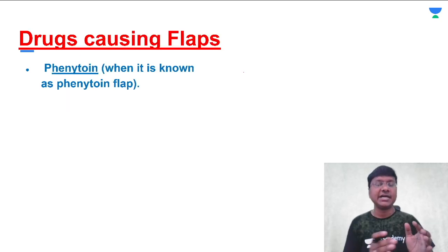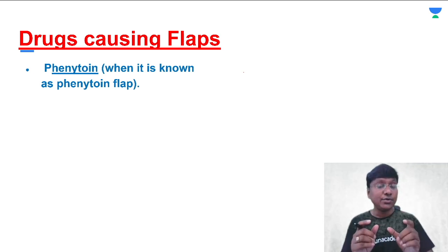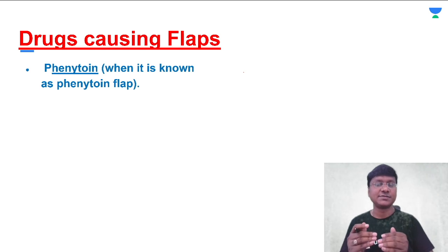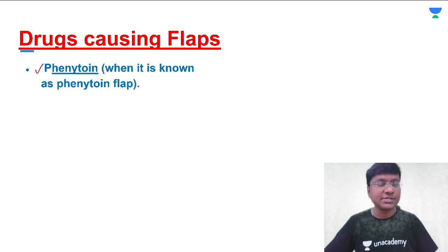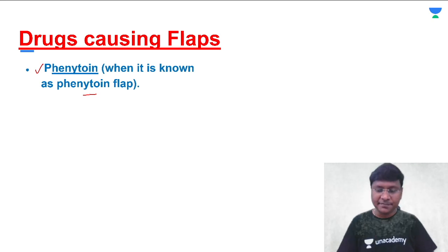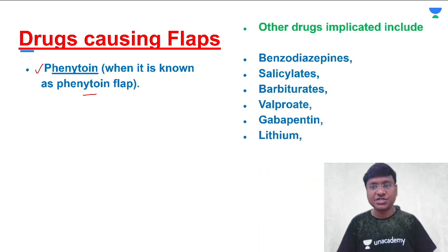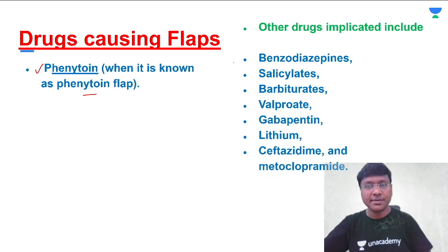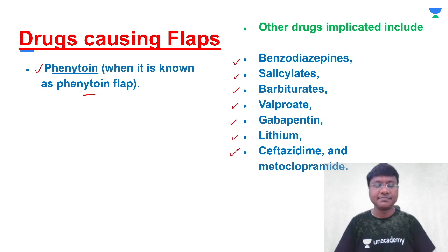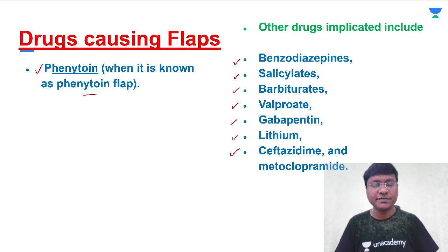An extra edge: even drugs are responsible for causing flapping tremors, and one very important drug is phenytoin — it can cause flapping tremors, which we call phenytoin flaps. Apart from phenytoin, other drugs causing flapping tremors include benzodiazepines, salicylates, barbiturates, valproate, gabapentin, lithium, ceftazidime, and metoclopramide. This slide will be an extra edge for you, as many are aware of systemic causes but few know the drugs causing this.